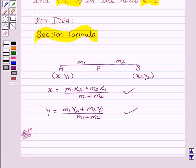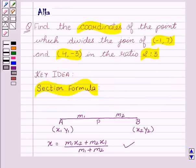Now let's start with the solution. In the given question, we have to find the coordinates of the point P which divides the join of (-1, 7) and (4, -3) in the ratio 2:3. That is, we are given m₁ and m₂ as 2 and 3, and coordinates of A as (-1, 7) and B as (4, -3).